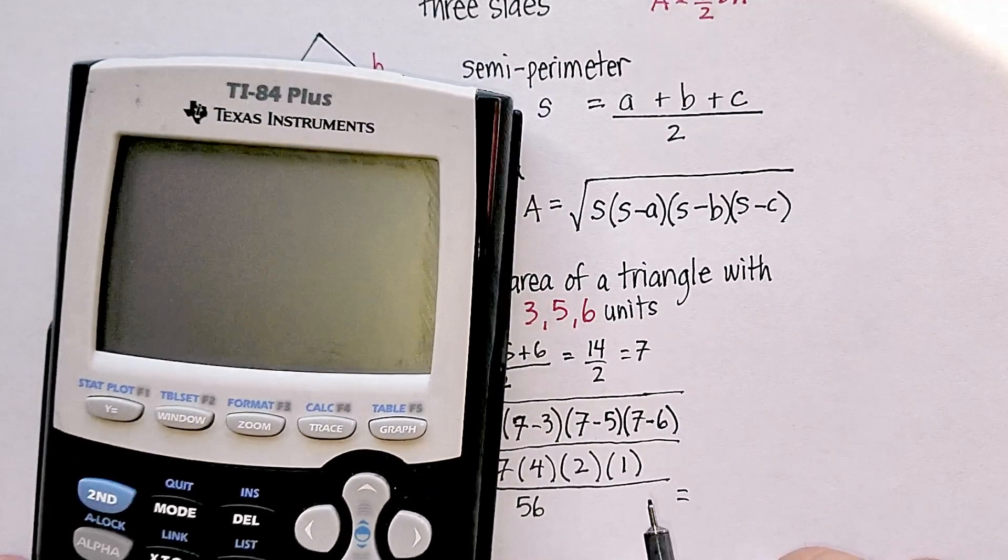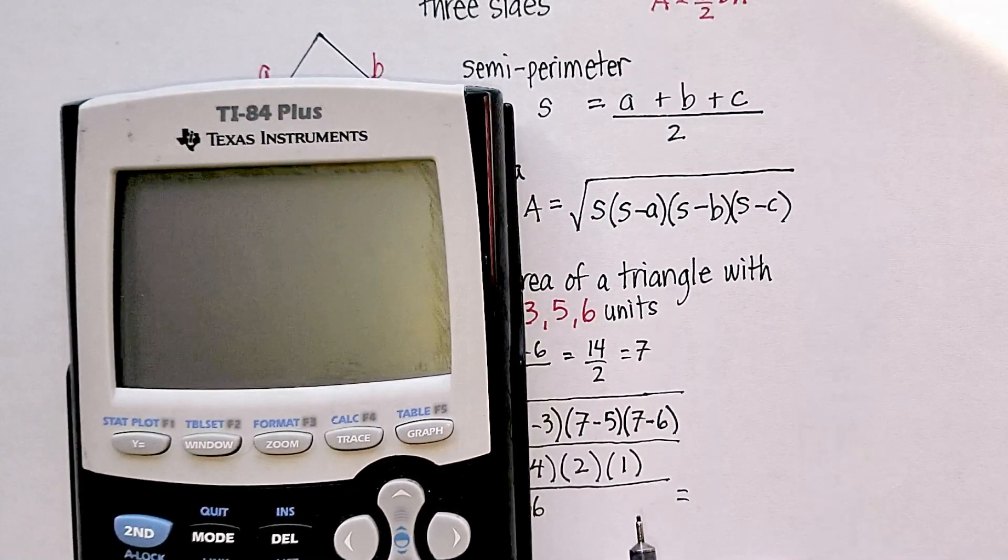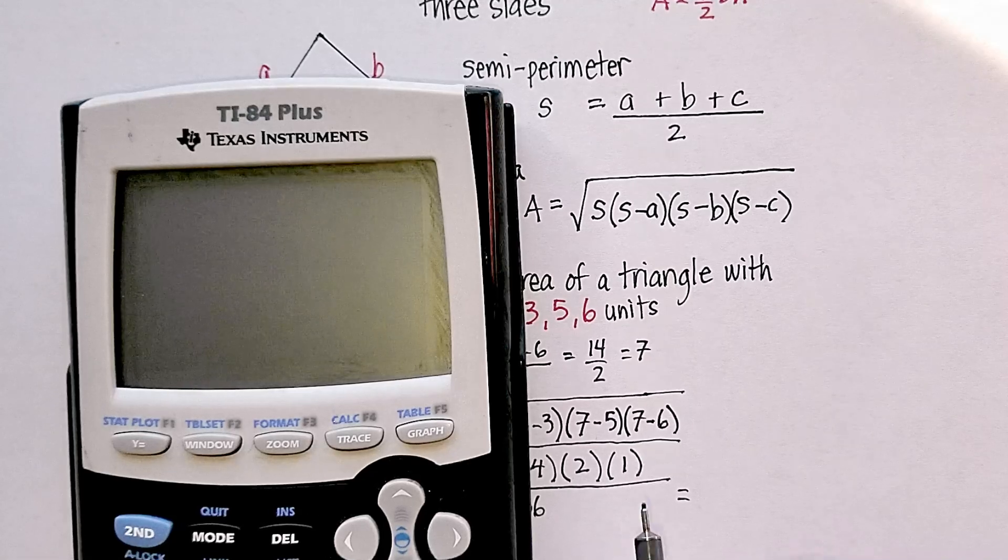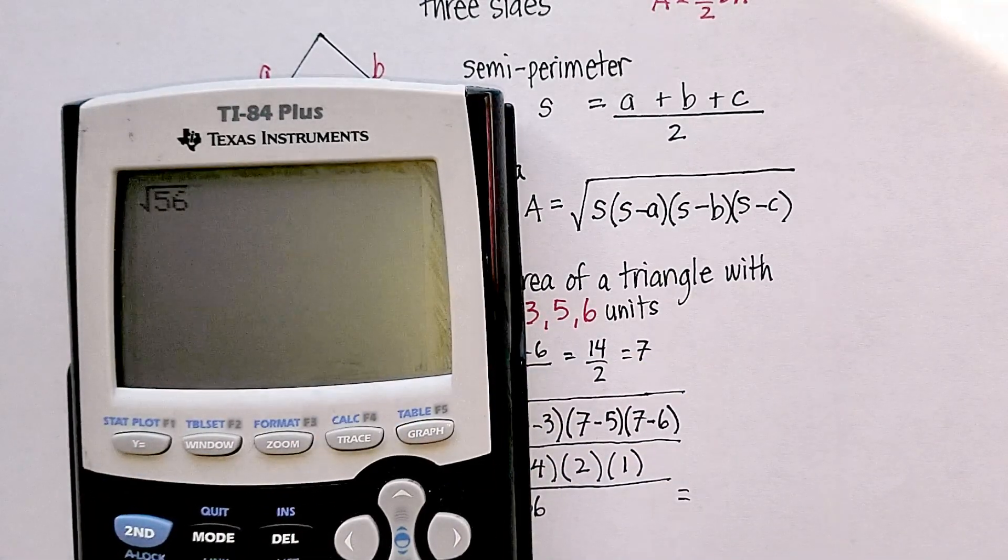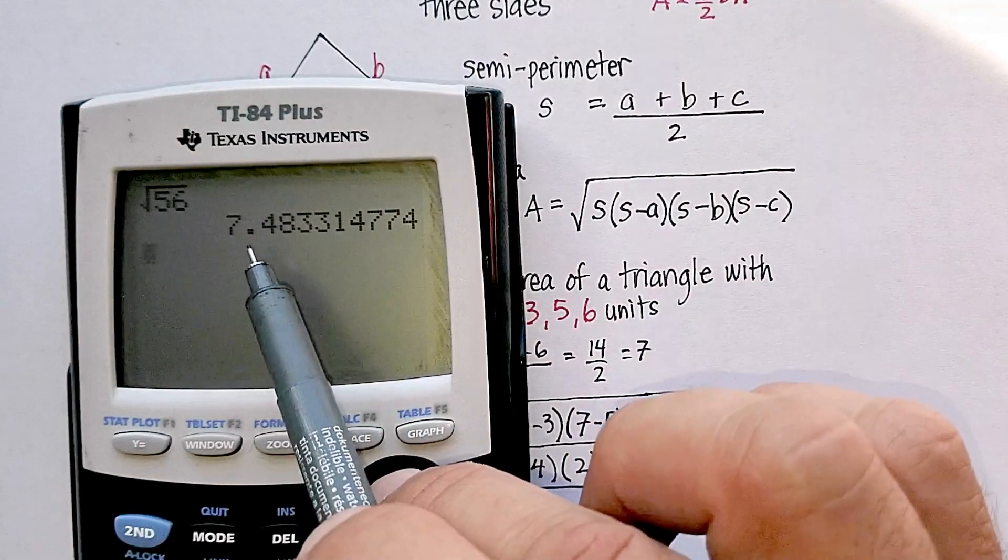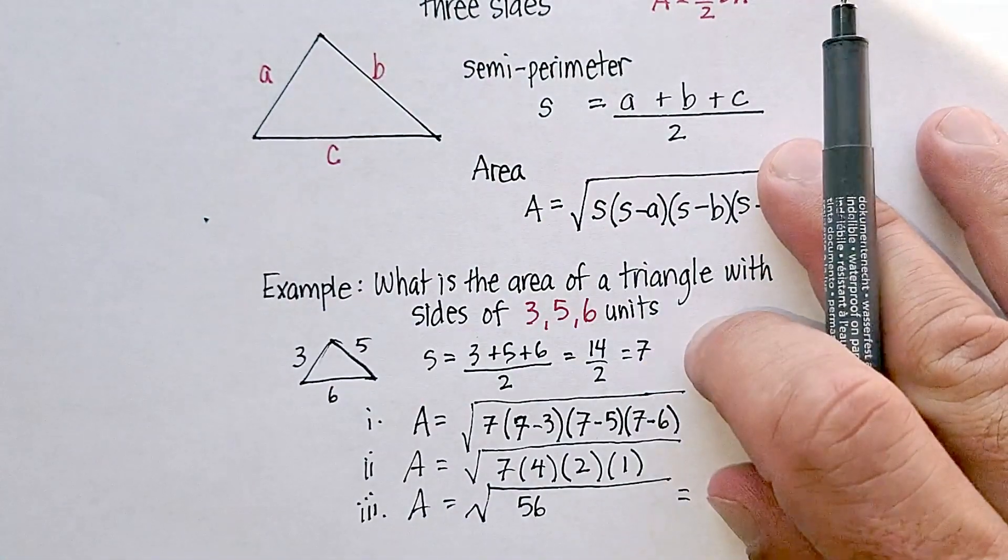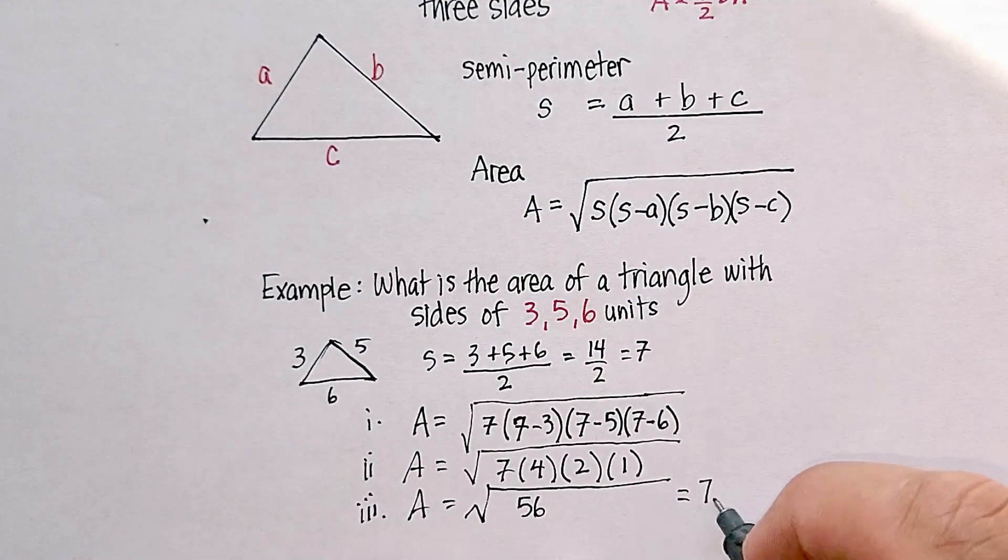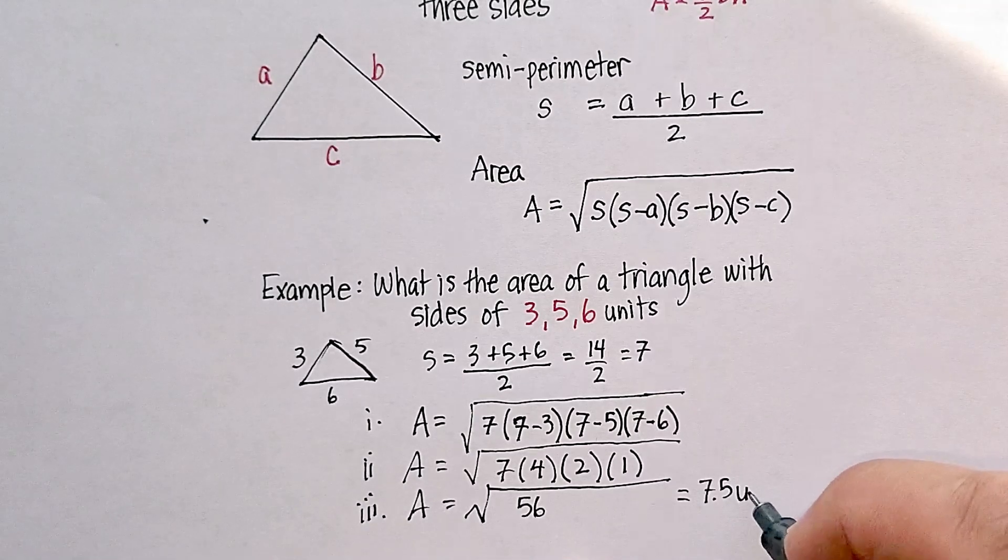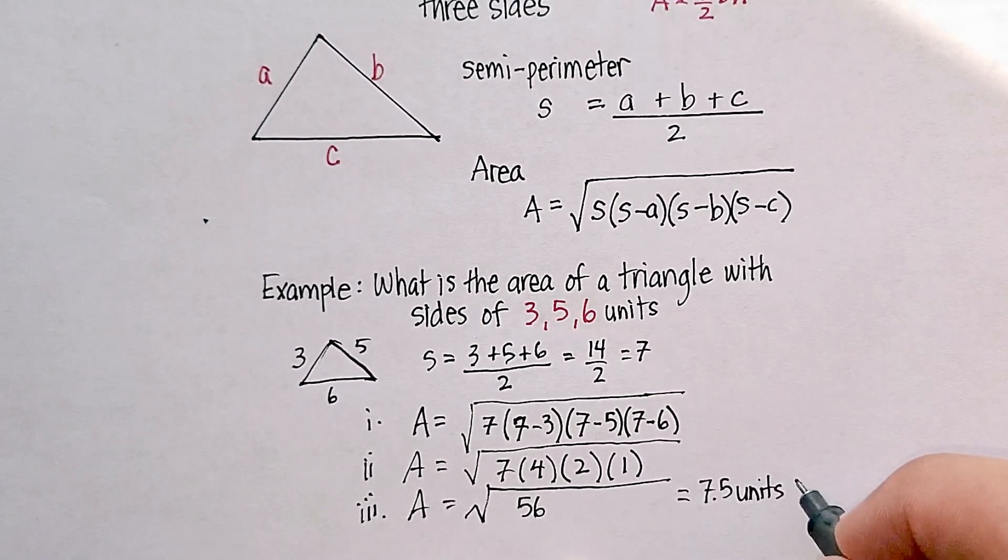So you could say that the area of this triangle is square root of 56. Let's just do a quick calculation. I know that 56 is going to be somewhere between 7 and 8 in terms of perfect squares. Square root of 56 is equal to approximately 7.48, or 7.5 units squared.